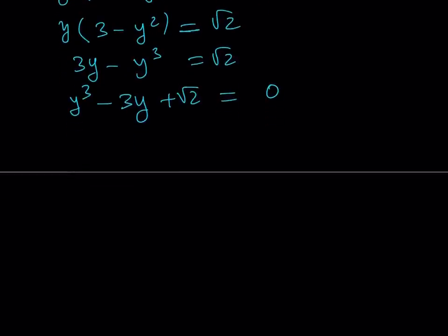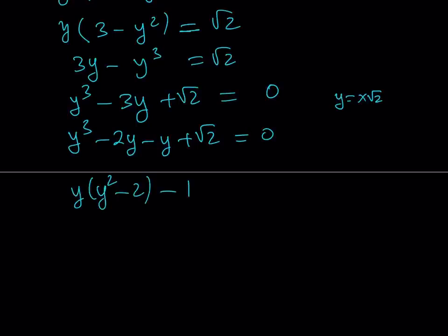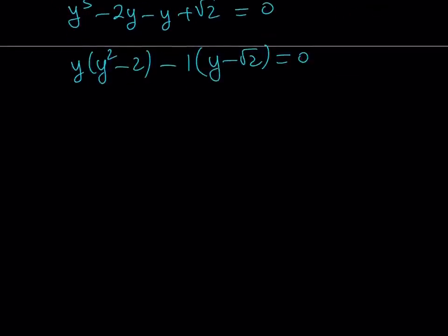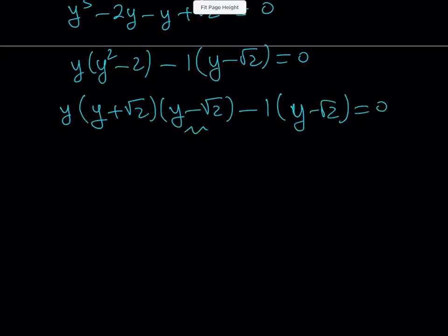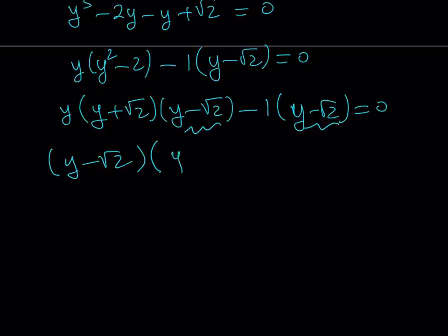Square root of 2 is a solution for this cubic. To factor, I split negative 3y into negative 2y minus y, which allows factoring by grouping. The first group factors using difference of two squares as (y plus root 2)(y minus root 2), and the second group gives negative 1 times (y minus root 2). Taking out the common factor (y minus root 2) confirms y equals square root of 2 is a solution. The remaining quadratic factor is y squared plus square root of 2 times y minus 1 equals 0.